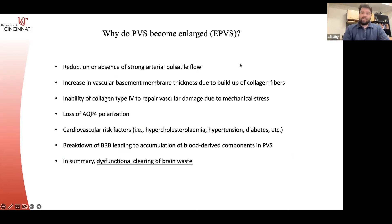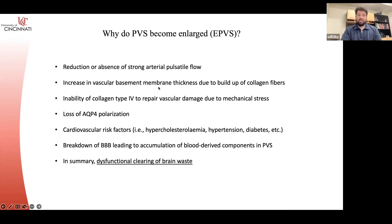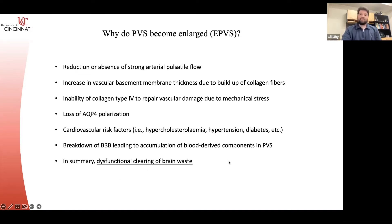Why do these become enlarged and why is it a problem? There are many reasons. There's loss of arterial pulsatile flow as you age — I'd say aging is the biggest risk factor so far. That involves reduction of arterial pulsatile flow, increased basement membrane thickness, inability of collagen to repair vascular damage, loss of aquaporin polarization, cardiovascular risk factors like high cholesterol, high blood pressure, and diabetes, and breakdown of the blood-brain barrier. In summary, the consensus is that enlargement is due to dysfunctional clearing of brain waste — compounds build up in the PVS and aren't efficiently evacuated, causing mechanical enlargement.